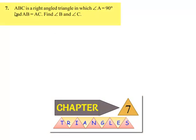Moving on to question 7. ABC is a right-angled triangle in which angle A equals 90 degrees and AB equals AC. Find angle B and angle C.